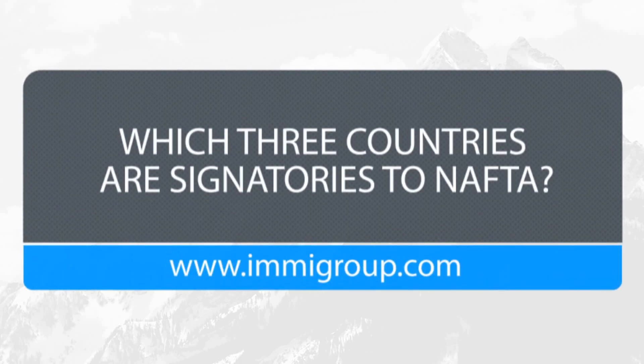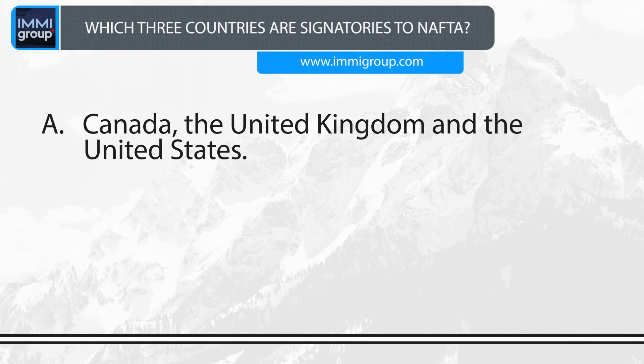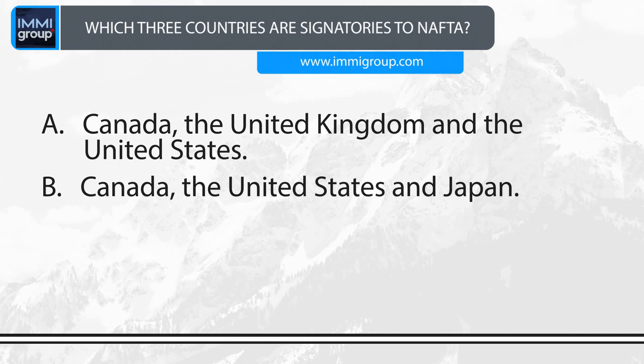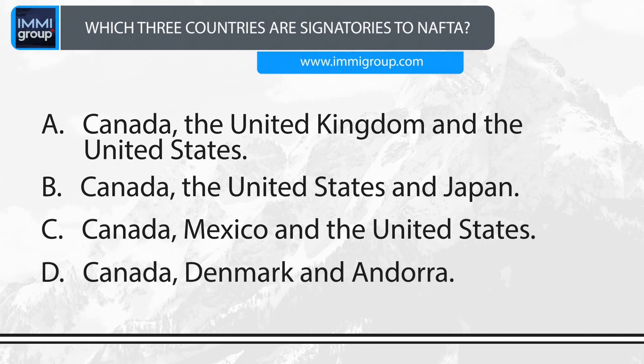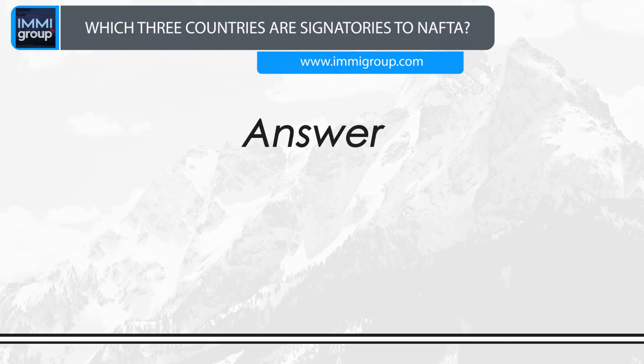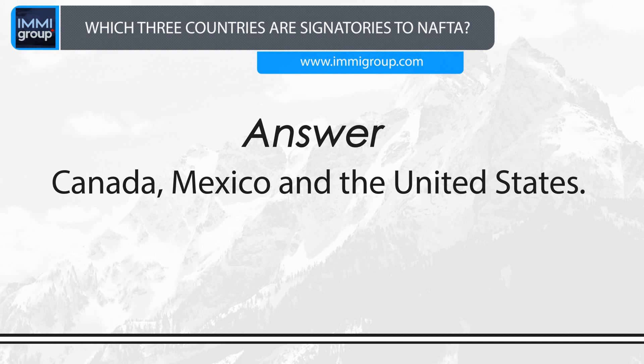Which three countries are signatories to NAFTA? A. Canada, the United Kingdom and the United States. B. Canada, the United States and Japan. C. Canada, Mexico and the United States. D. Canada, Denmark and Andorra. Answer: Canada, Mexico and the United States.